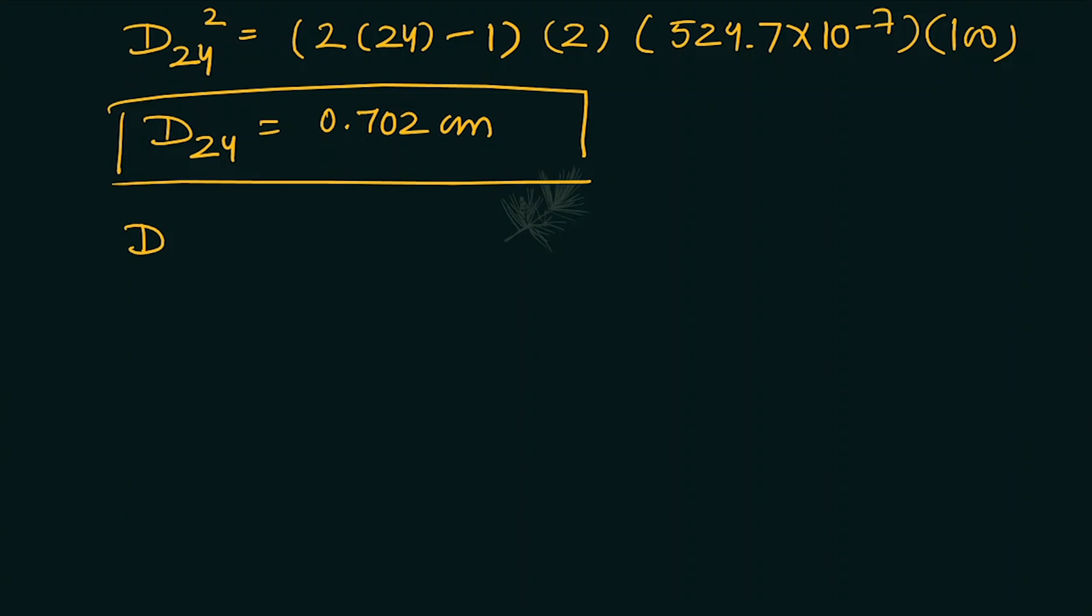Similarly for 36th ring, which is √[2(36-1) × 524.7×10^-7 × 100], the radius of curvature. So the value for this 36th ring is 0.863 centimeter.